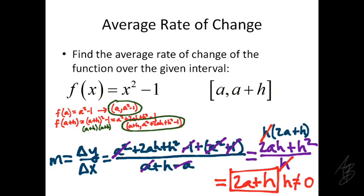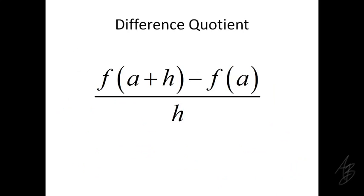So we've done a few problems here. We did one with numerical values for the endpoints. Then, in two different ways, we generalized the average rate of change for this function: first using variables a and b as endpoints, and second using a as the left endpoint and h as the width of the interval. Both methods will be very useful when we start computing instantaneous rates of change. This difference quotient — a fraction we'll see fairly often in this class — will help us find the derivative, the first major concept of calculus. We'll save that example for the next video.